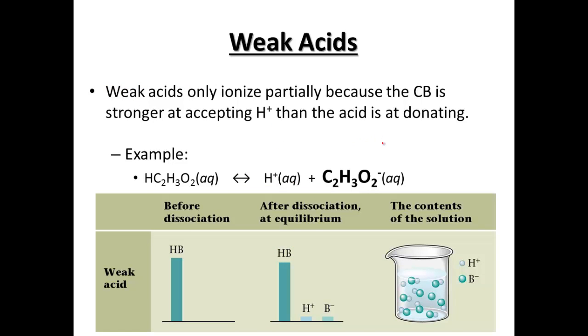Now the reason why this is, is the conjugate base has the ability to accept the hydrogen to move back. It wants to accept that H+ more than the acetic acid wants to donate the H+. So we end up with mostly our starting material, the reactant, in this case acetic acid, and very little hydrogen ion and very little acetate ion. And that will be the end of our strong versus weak acids.